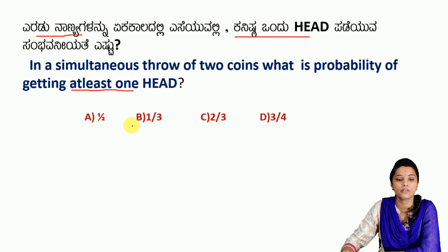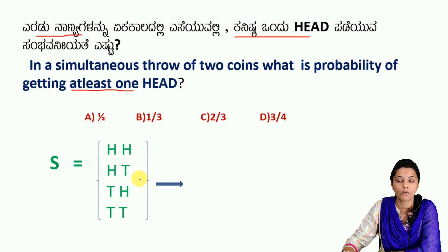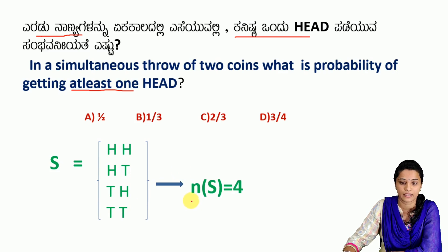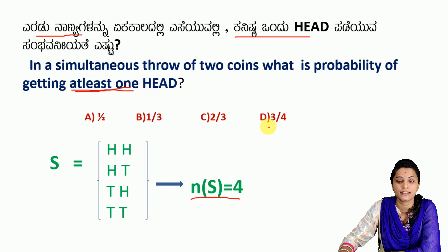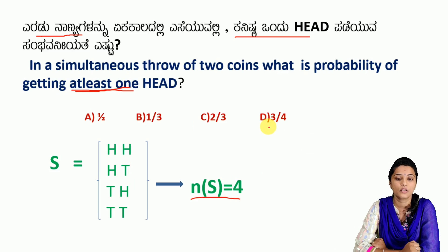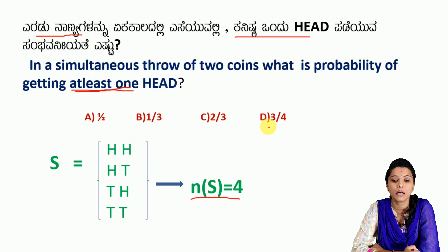Using 2 power N: for 2 coins, 2 squared is 4. N(S) equals 4. The outcomes are: head-head, head-tail, tail-head, tail-tail. N(S) equals 4. Now we calculate N(E). The question asks for at least one head, meaning a minimum of one head.